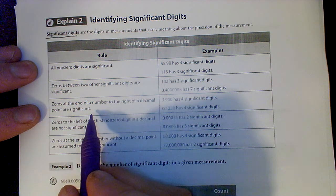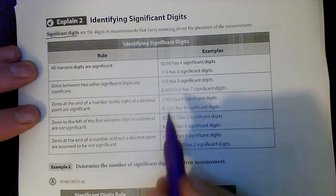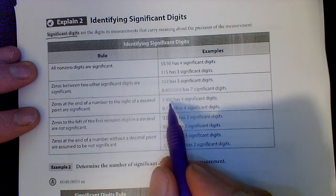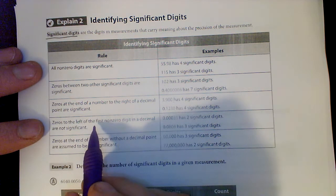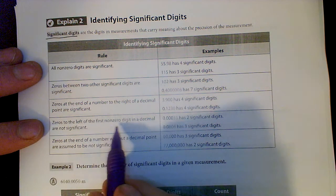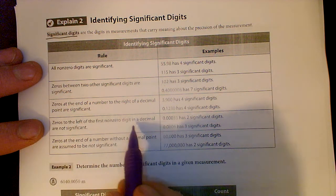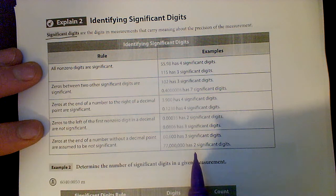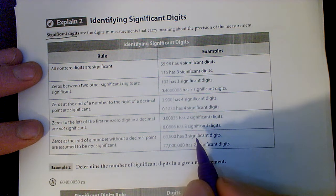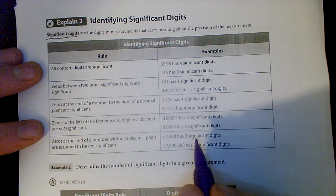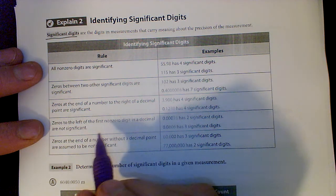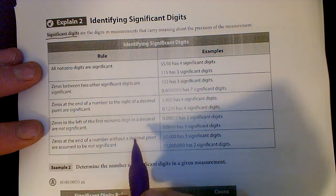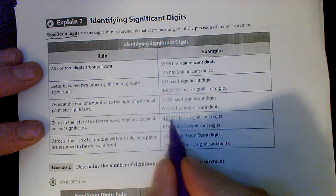Zeros at the end of a number to the right of the decimal are significant. This one hits me a little weird - if there's a decimal and they add zeros to the end, those are significant. Zeros to the left of the first non-zero digit in a decimal are not significant.